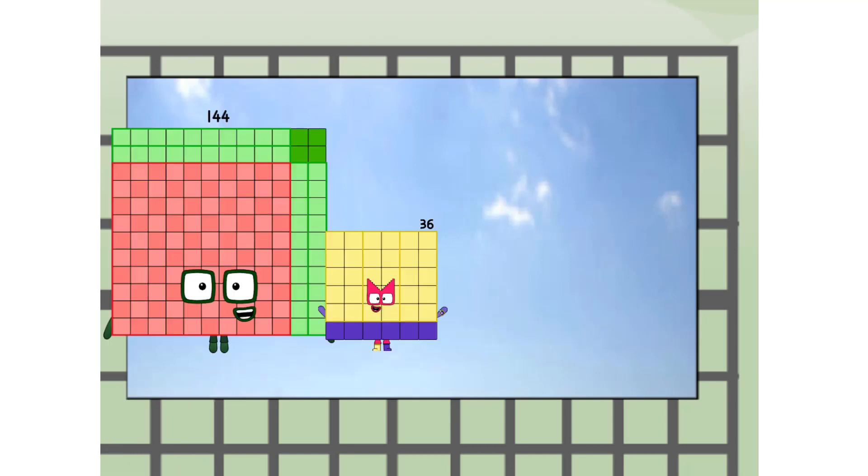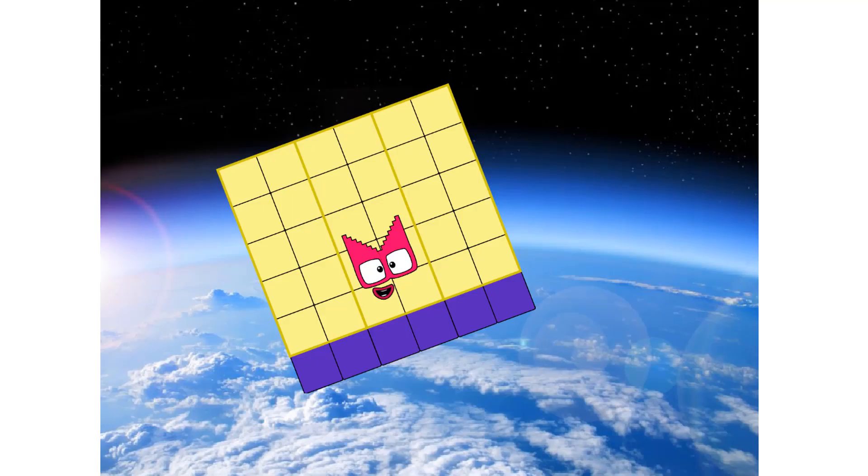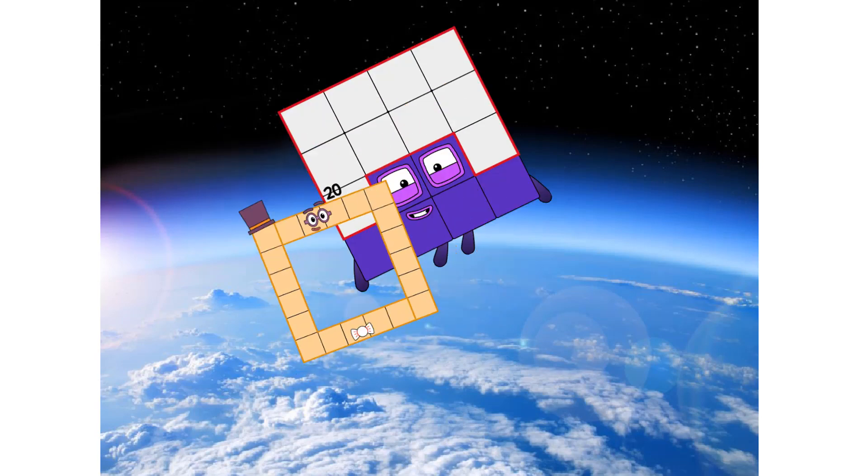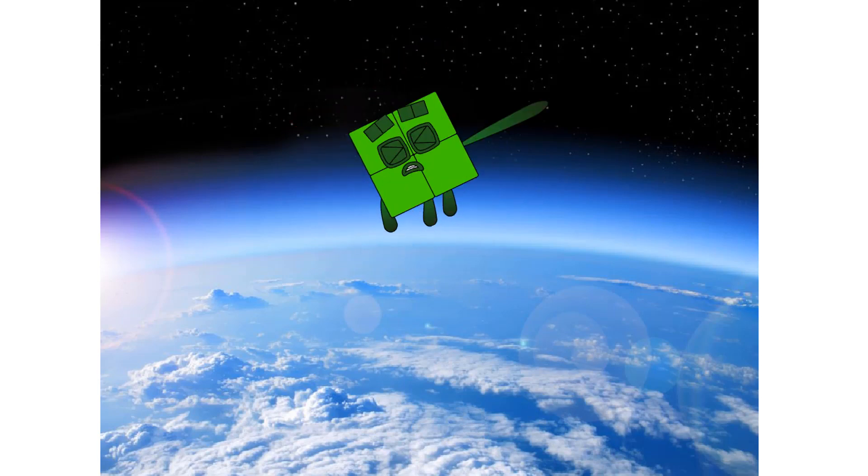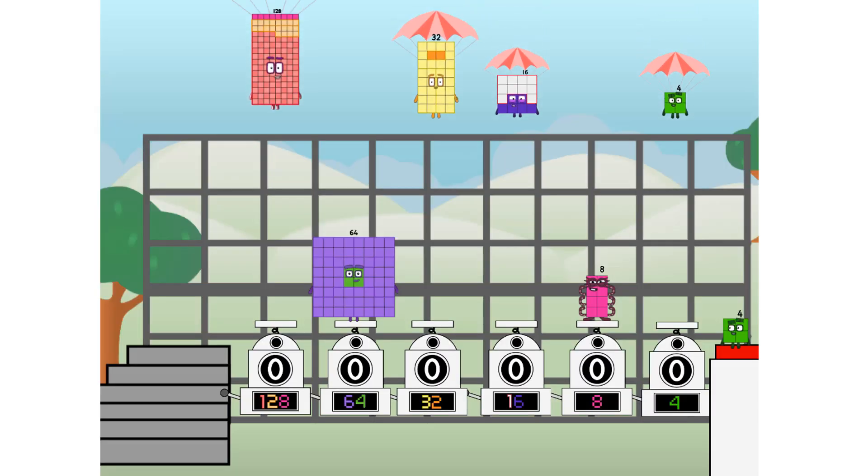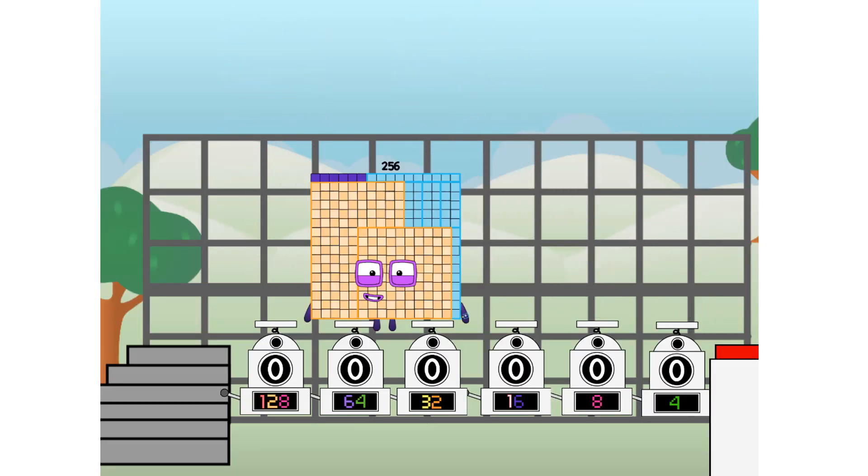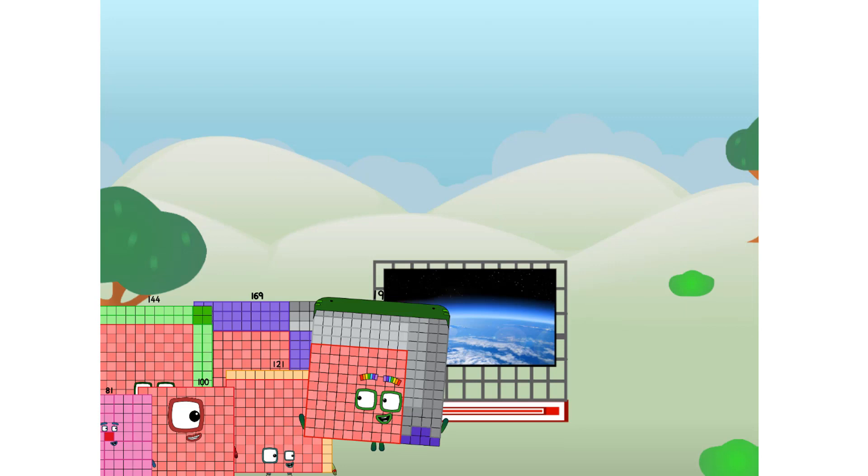We're two squares. The edge of space, nearly there. Achoo! We saw a square to the edge of space without rockets. We just need a little more power.